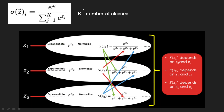If you observe the Softmax formula, it is just taking the exponential of the inputs and normalizing by dividing by the sum of all the exponentials. K is the number of neurons in the output layer. We do this to get the output values ranging from 0 to 1.